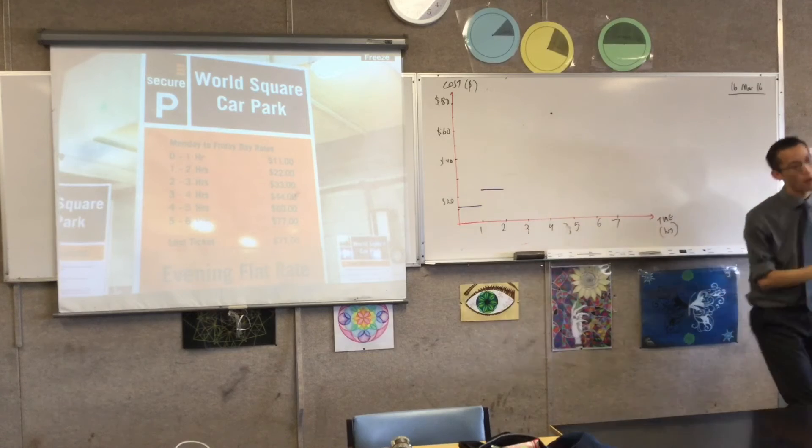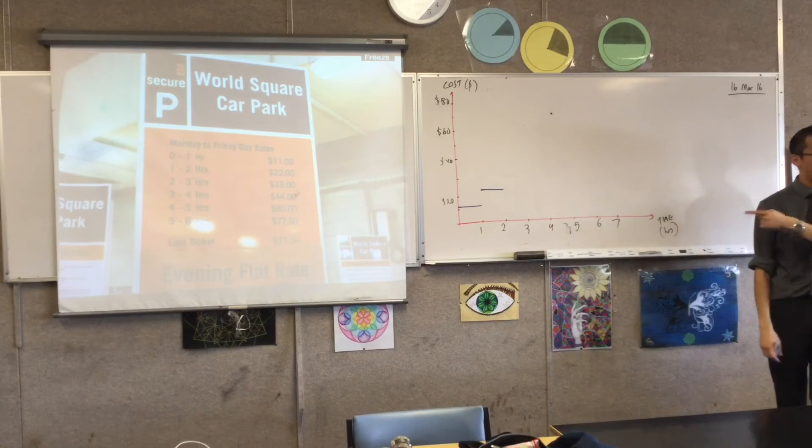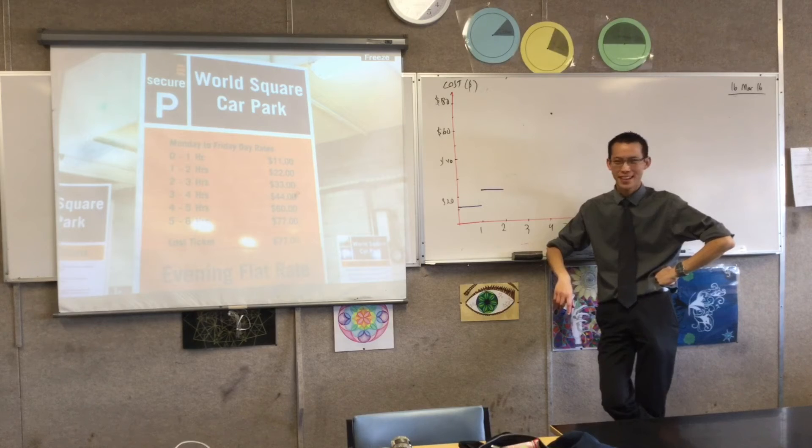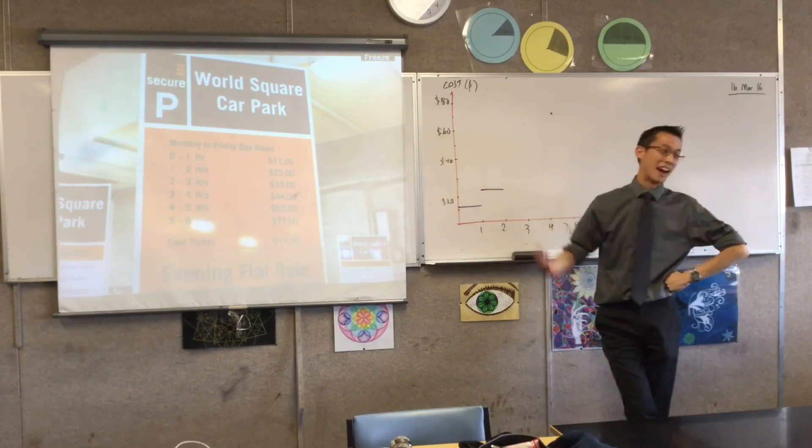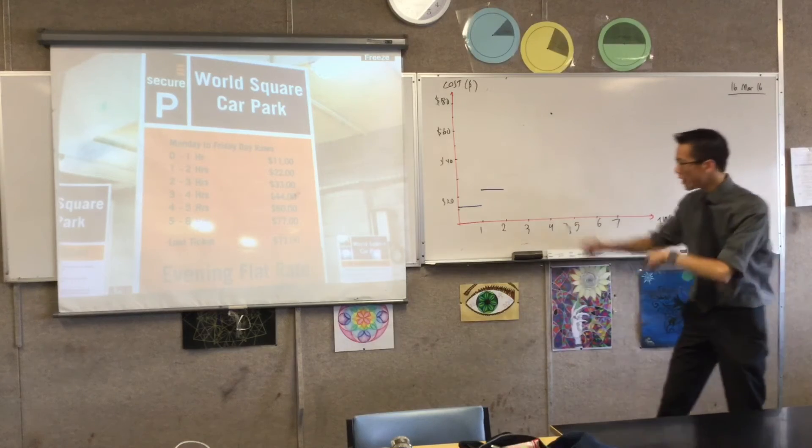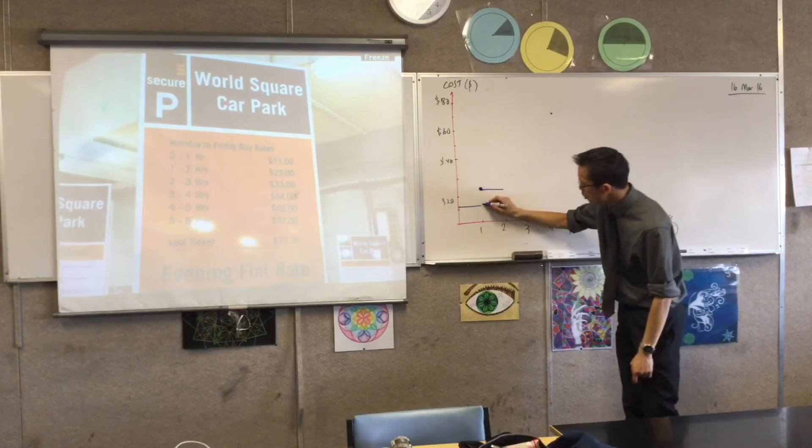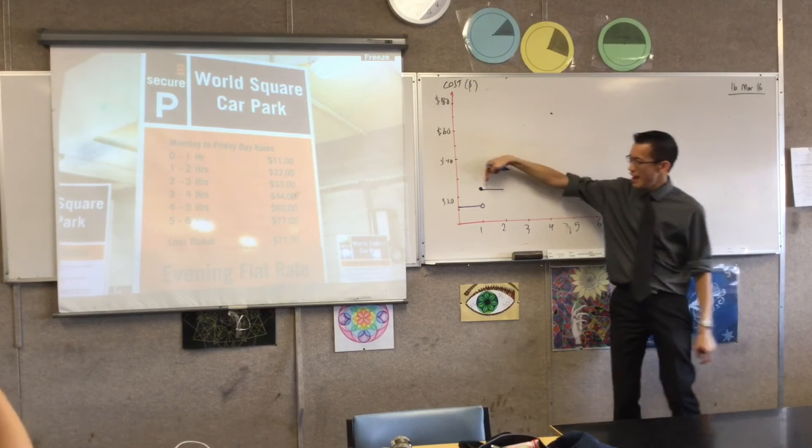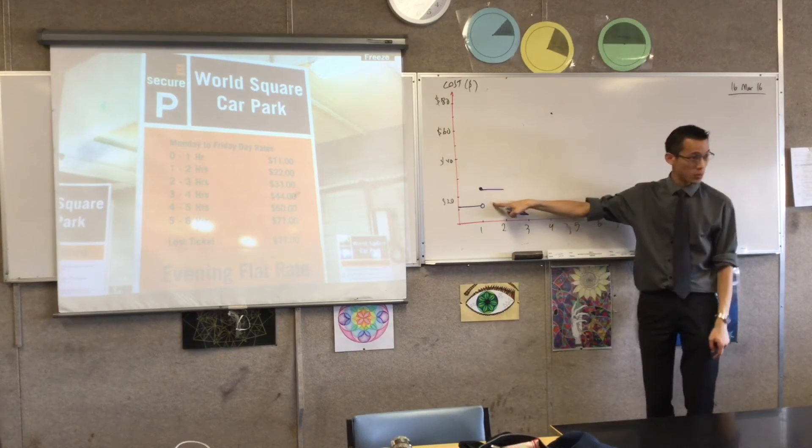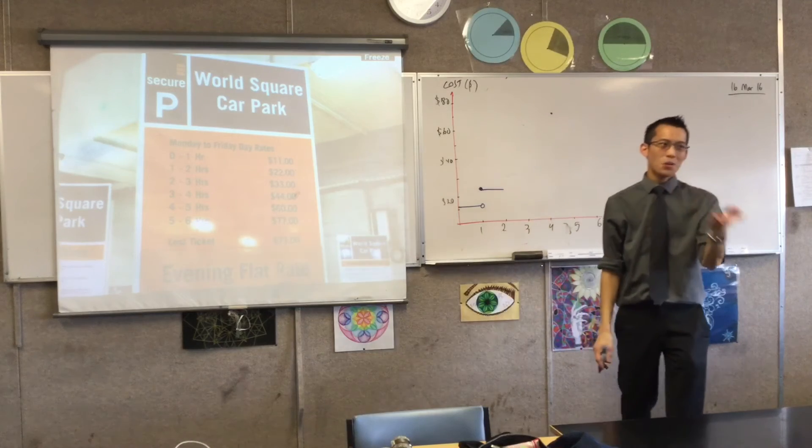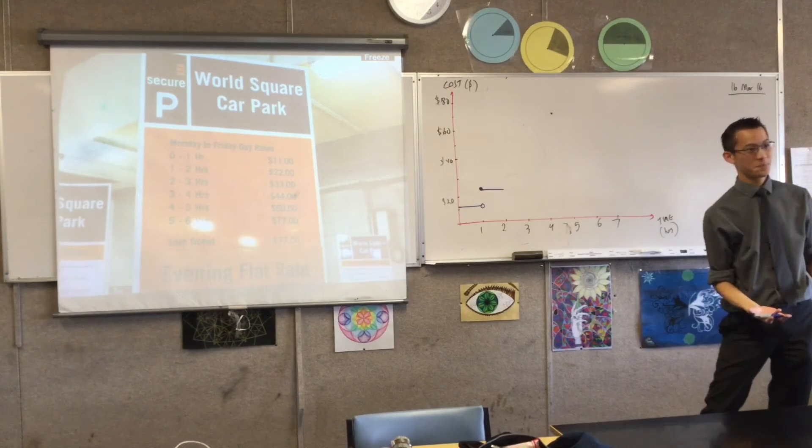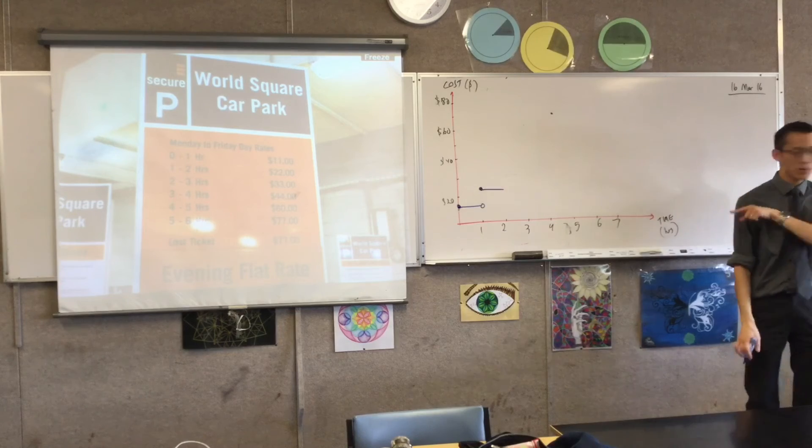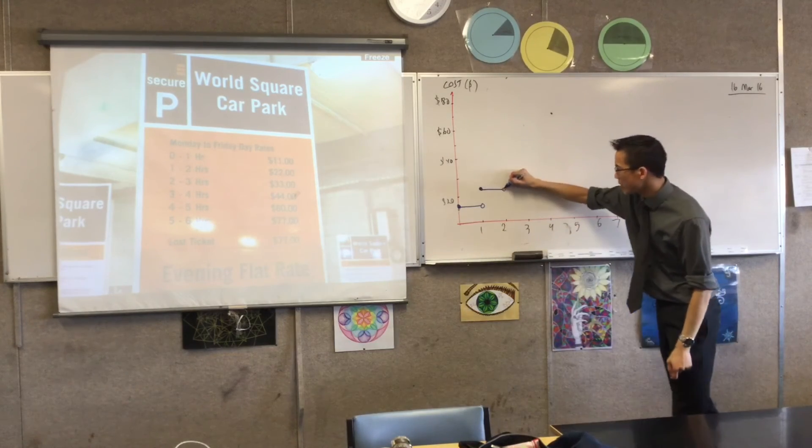If you spend exactly one hour, it's ambiguous. Which will the car park charge you? The higher one, clearly - the house always wins. So this value counts, not that one. You've seen filled and hollow circles before. It means this value matters, not this one. Once you enter the car park, the second you get in you're paying - that's why there's a filled circle here. The pattern continues.